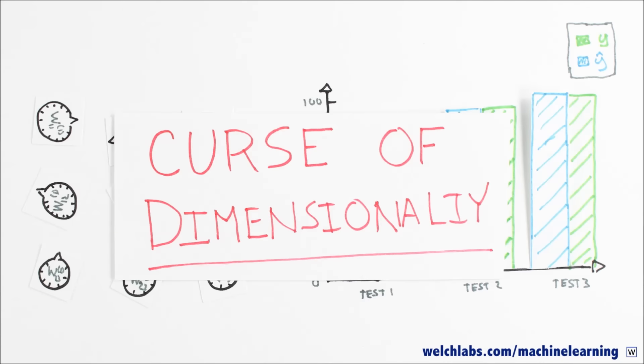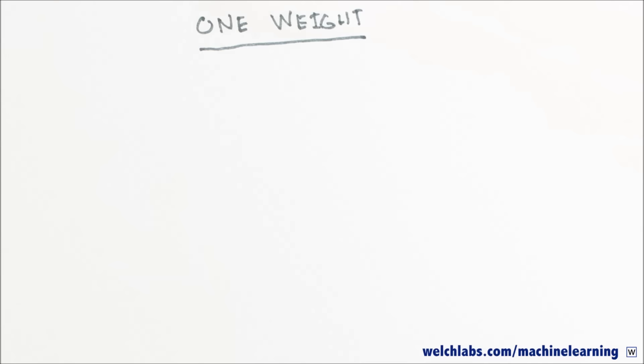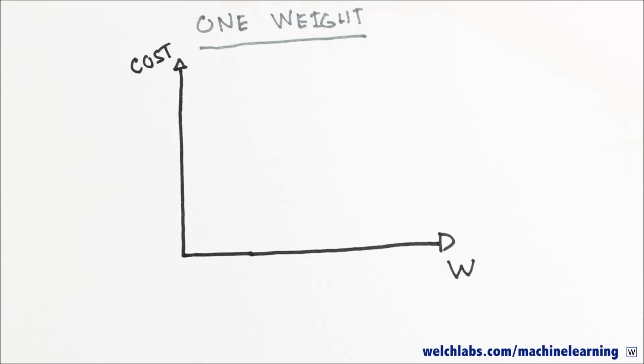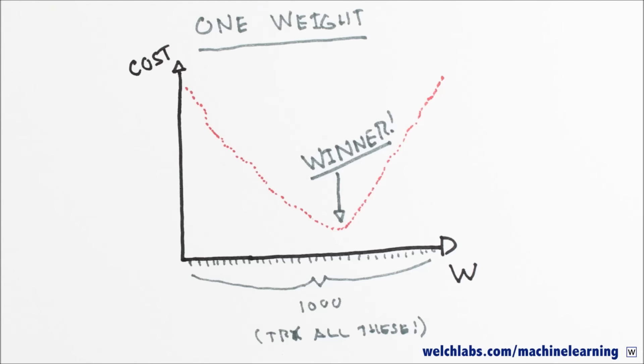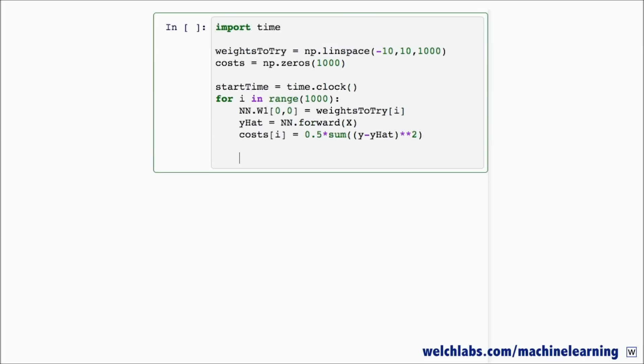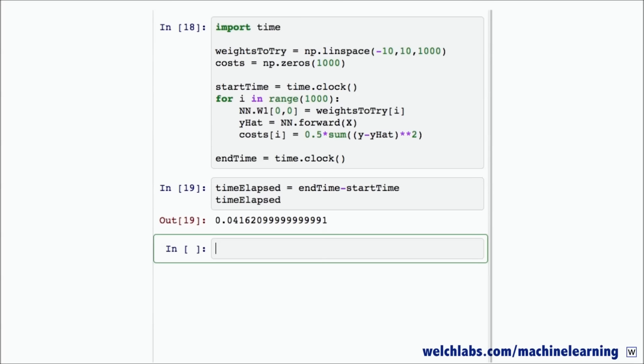Enter the curse of dimensionality. Here's the problem. Let's pretend for a second that we only have one weight instead of nine. To find the ideal value for our weight that will minimize our cost, we need to try a bunch of values for W. Let's say we test a thousand values. That doesn't seem so bad, after all, my computer is pretty fast. It takes about 0.04 seconds to check a thousand different weight values for our neural network.